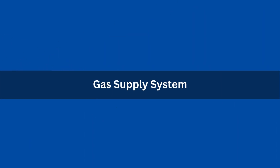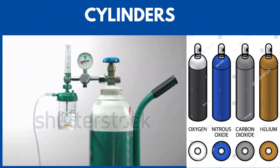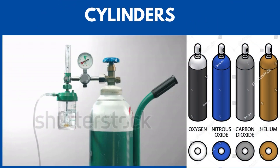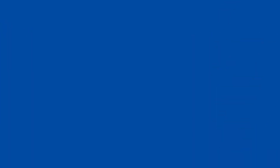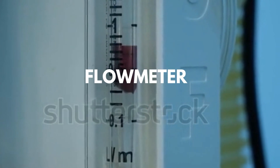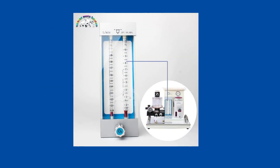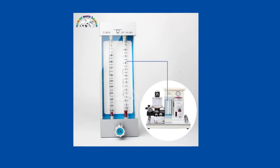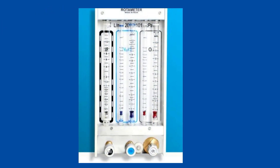First, we will talk about the gas supply system. We have cylinders which contain compressed gases under pressure, and they are all color coded. We also have flow meters, which regulate the flow of gases to be delivered to the patient in liters per minute, and are set according to requirements.